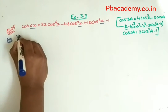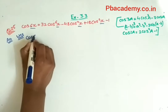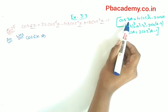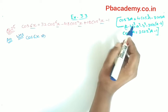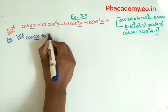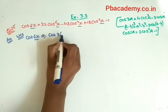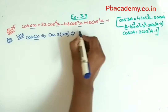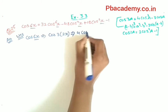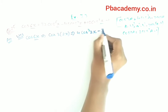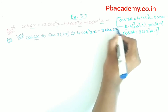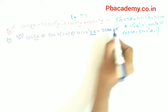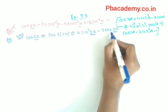Now I will take the left hand side which is cos 6x. I will split 6x as 3 × 2x, writing it as cos 3(2x). Now I can use the cos 3a identity, so it will become 4 cos³(2x) minus 3 cos(2x). Now I will convert cos 2x using the cos 2a identity, since we are having 2x and cos 2x.